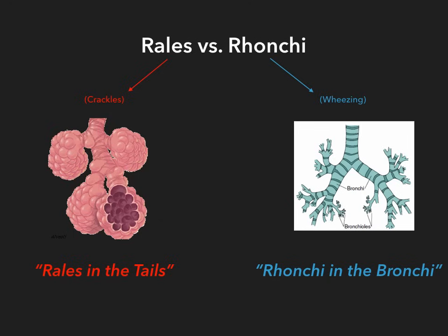Rails are usually due to fluid overload or fluid accumulation. So if you have a pneumonia and you have fluid buildup in the alveoli, or you have pulmonary edema and fluid buildup in the alveoli, you're going to hear those Rails — those crackly noises that kind of sound like you're rolling crumpled up paper in your fingers. If you have Ronchi, it's typically inflammatory in nature. People who have an asthma attack have wheezing because there's constriction of the large airways, or maybe there's mucus plugging of the large airways. That's Ronchi. So Ronchi tends to be more inflammatory, and Rails tend to be more fluid-related.